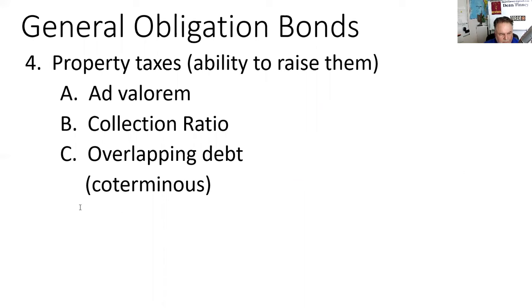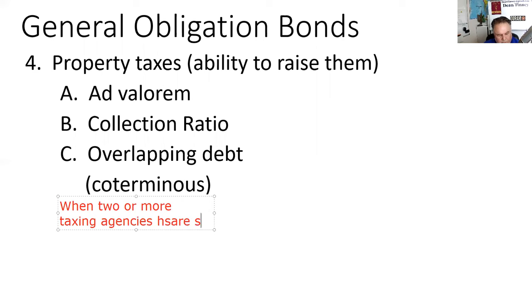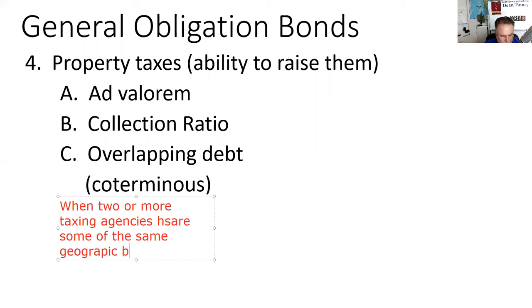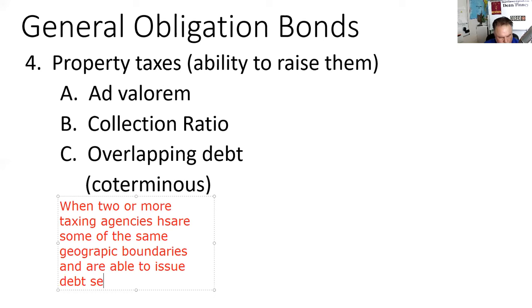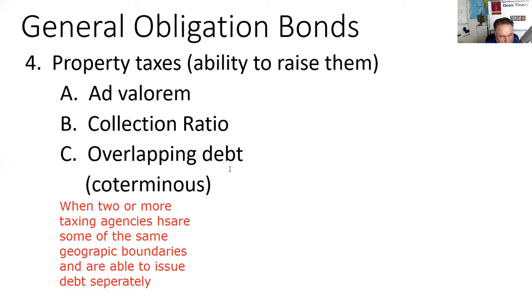Overlapping debt: when two or more taxing agencies share some of the same geographic boundaries and are able to issue debt separately, they are said to be coterminous — a Latin term meaning living together.